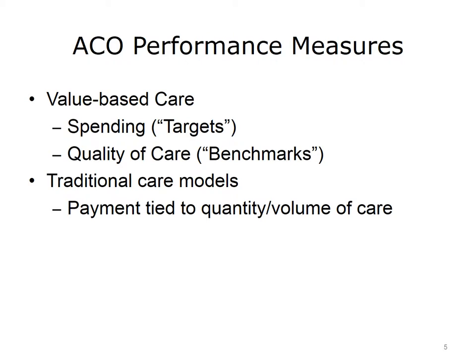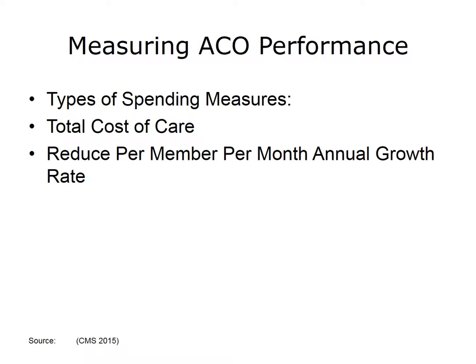This section will focus on the potential ways ACO performance will be measured. We will describe how ACOs will set spending targets and quality of care benchmarks. These two categories of measurement are central to the values-based concept of the ACO, and differ from traditional payment systems tied to the quantity or volume of care provided. In most cases, ACO spending performance is focused on measures of the total cost of care for a defined set of patients, or ACOs set spending targets related to a reduction in the per-member, per-month growth rate in spending.